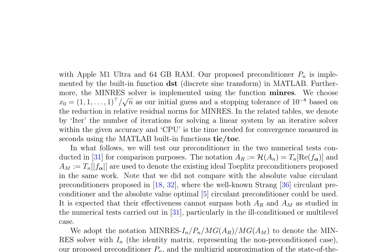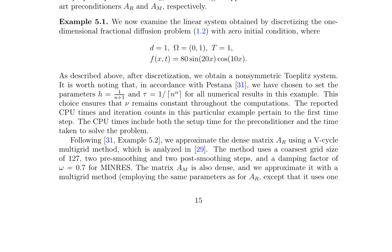The proposed preconditioner is tested in two numerical tests from reference 31 for comparison purposes, alongside the existing ideal Toeplitz preconditioners AR and AM. The MINRES solver with different preconditioners is denoted by MINRES with PN, MG-AR, and MG-AM, where the unpreconditioned case uses no preconditioner, PN represents the proposed preconditioner, and MG-AR and MG-AM represent the multigrid approximations of the state-of-the-art preconditioners AR and AM, respectively.